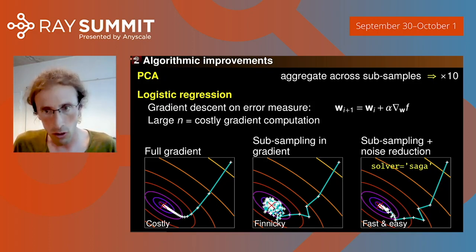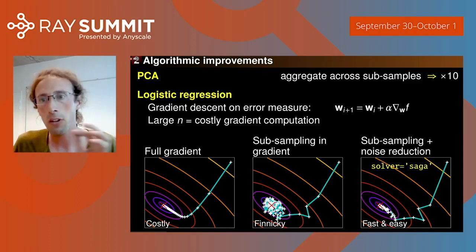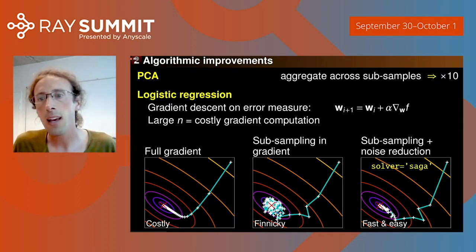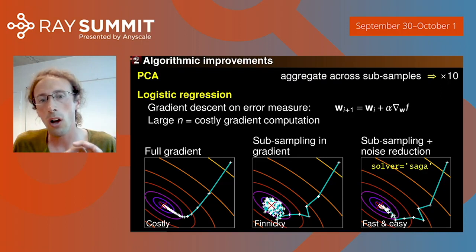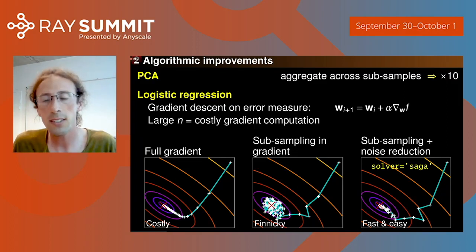What you can do is combine the idea of subsampling the gradient with noise reduction — taking a clever average with the past. For this, there's an algorithm known as SAGA, which gives you the best of both worlds: it's not finicky, does not require you to choose a learning rate, and it's much faster because it can exploit the redundancy in the data. That's an example of an algorithmic improvement.